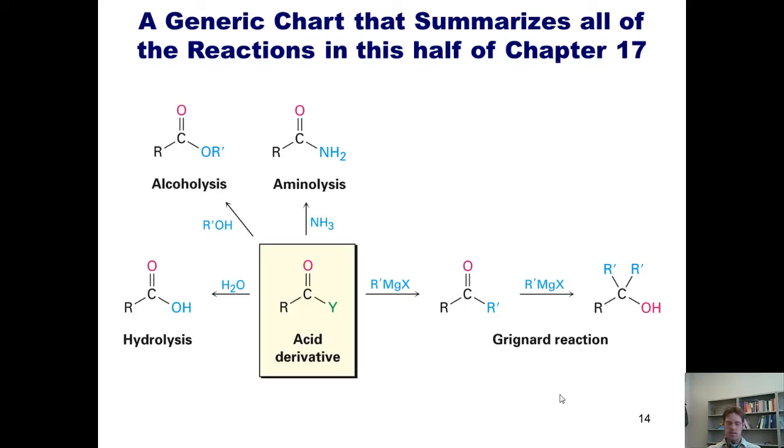This slide summarizes all of the reactions featured in the first half of Chapter 17. As you can see, what we'll learn is that you can start with a number of acid derivatives and depending on what Y is, you can displace it with a hydroxide nucleophile to form a carboxylic acid, with an alcohol as a nucleophile to form an ester.